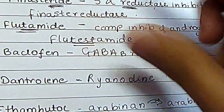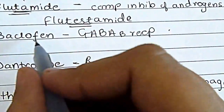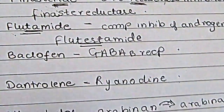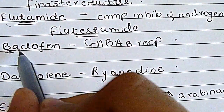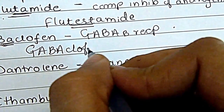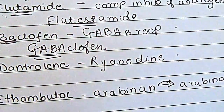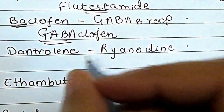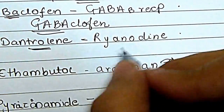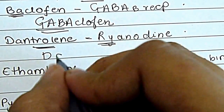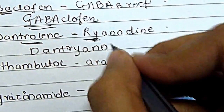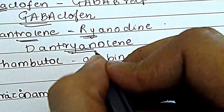For baclofen, you can merge the prefix at the beginning. Instead of calling it baclofen, I call it 'Gabaclofen' — crazy, but it does the job of reminding me which neurotransmitter receptor it acts on. For dantrolene, since it relates to the ryanodine receptor, I start calling it 'Danthrhinoline,' and that helps me remember the ryanodine receptor.